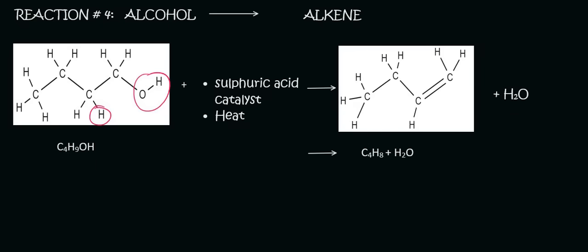We started with an alcohol, we added some sulfuric acid as a catalyst, we heated it up and that caused the OH and the H to break away forming a water molecule and then to allow both of these carbons to still have four bonds, a double bond was developed.